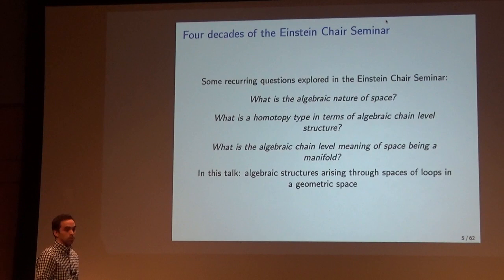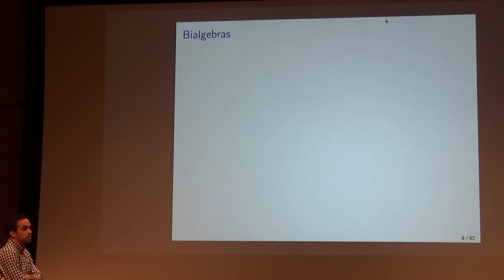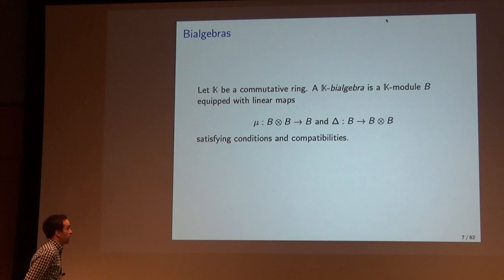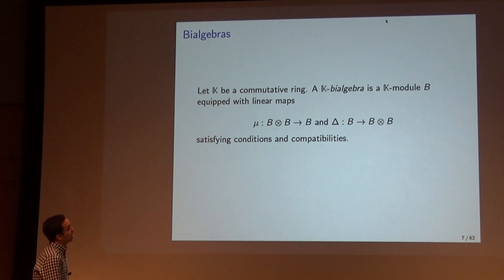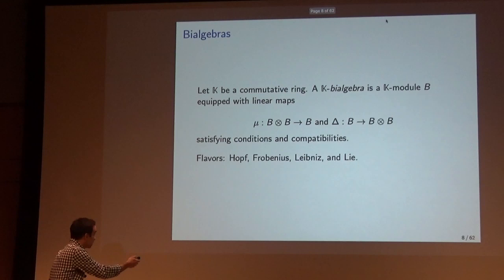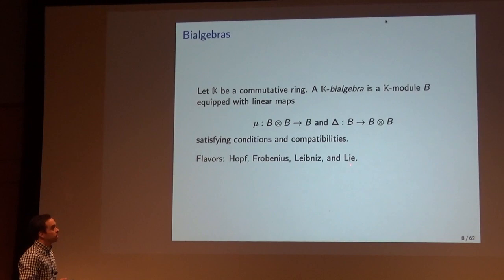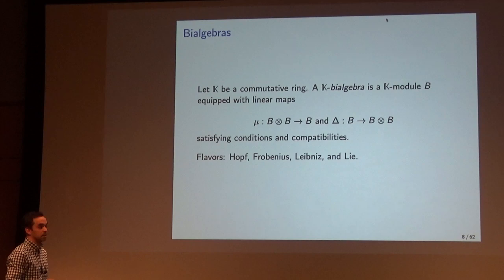It turns out that the structure of loop spaces will reveal a lot of the structure of the underlying space. This talk will feature different types of bi-algebras. So let's fix a commutative ring K. By a K bi-algebra, I mean a K-module B equipped with a product map, which I will call Mu, and a co-product map that satisfy certain conditions and compatibilities. Today we will discuss four types of bi-algebras, associated to four names of mathematicians: Hopf, Frobenius, Leibniz, and Leibniz.